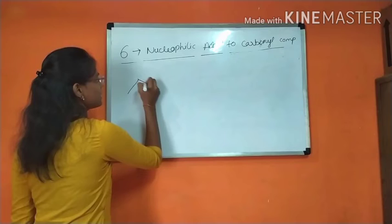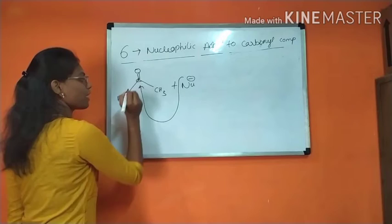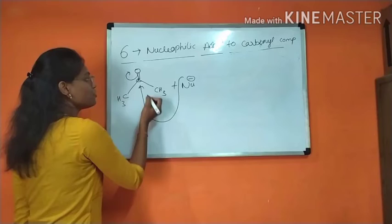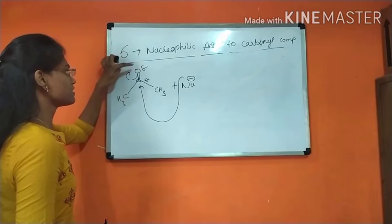For example, I am taking a ketone compound. It is a ketone. In the presence of a nucleophile, when this nucleophile approaches towards the carbonyl carbon, it gets activated, resulting in the breakdown of this pi bond. Due to this, a partial negative and partial positive charge is formed. The electronegativity difference is higher for oxygen, so it forms a partial negative charge, and here for carbon, it forms a partial positive charge.